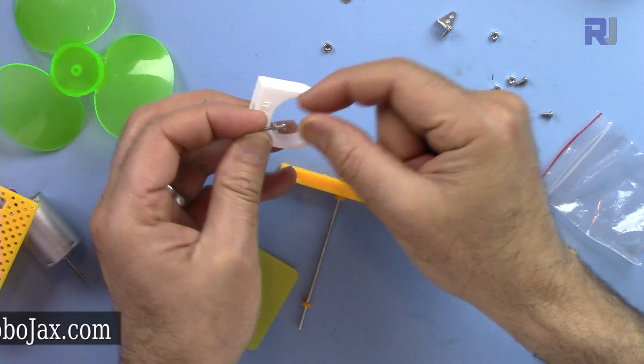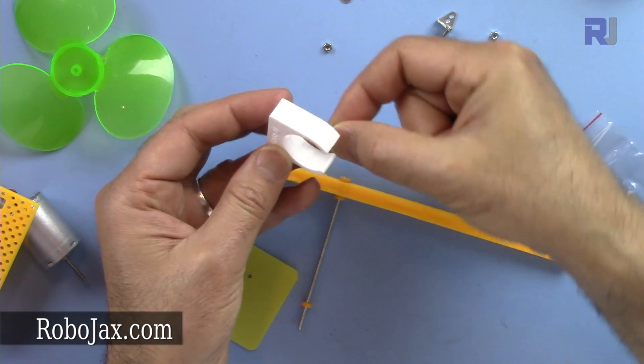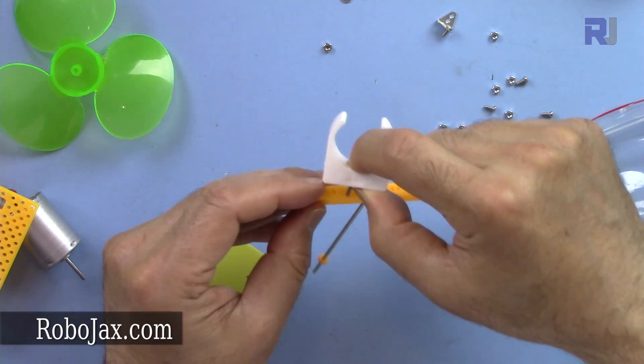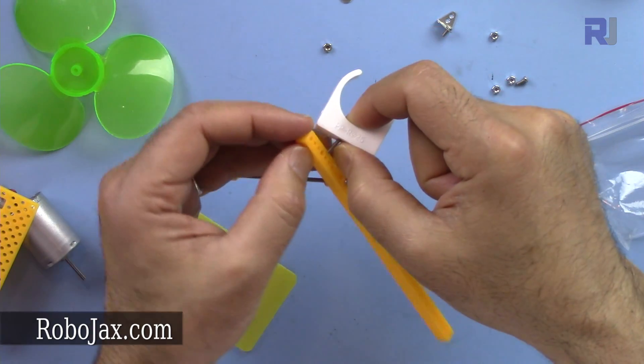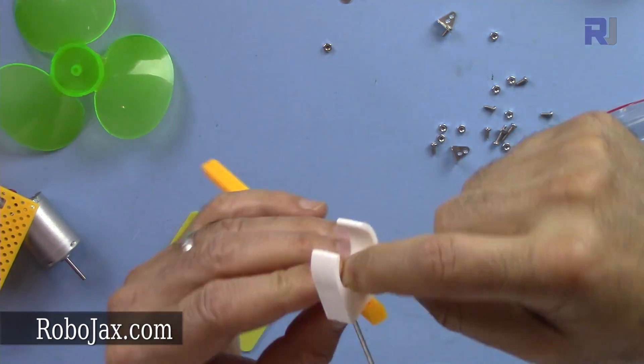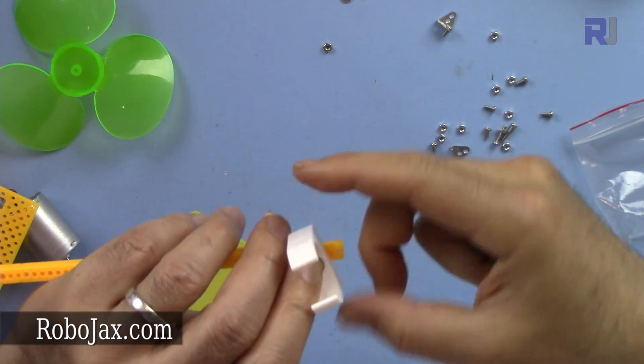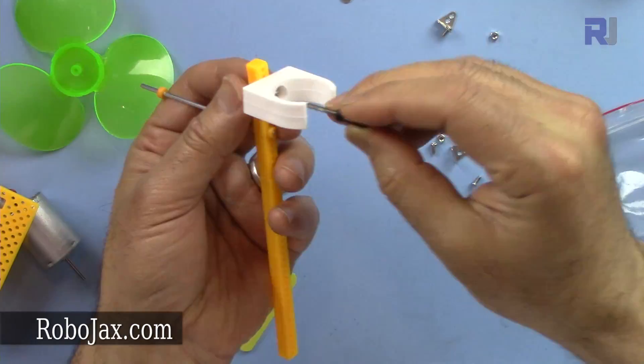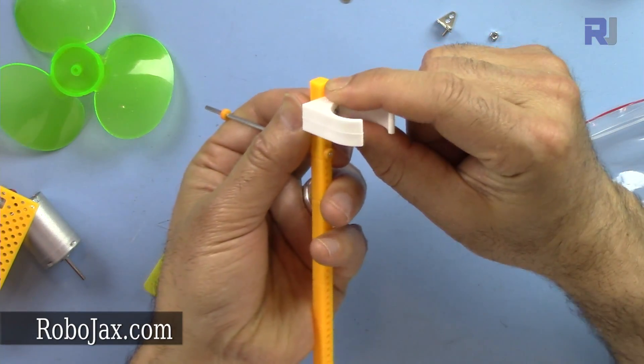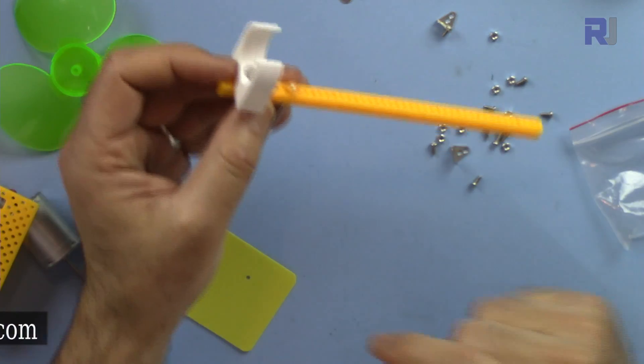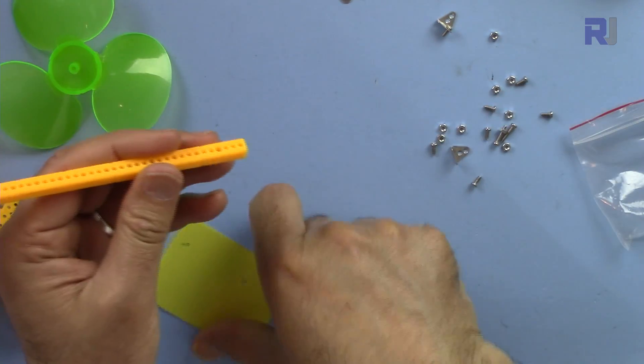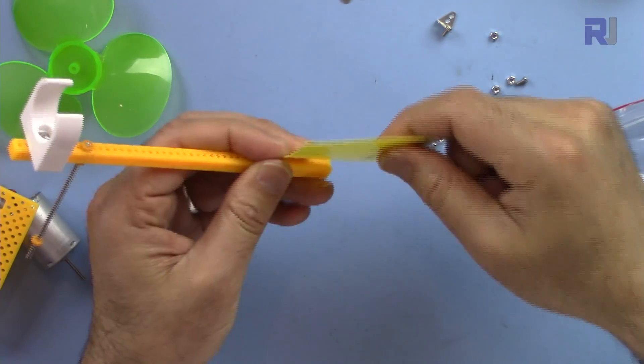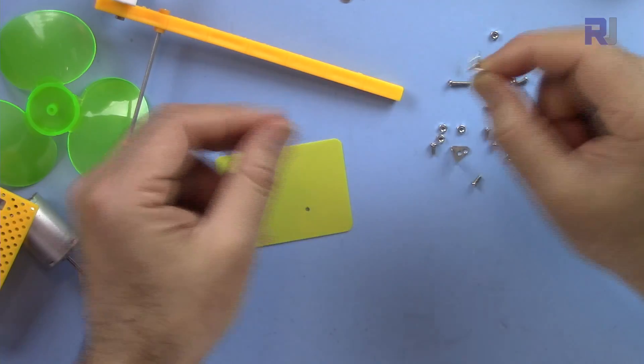So get one of these, unscrew it, and then pass it here. Then pass it from here. So that is tight enough and then we need to have this one attached here.